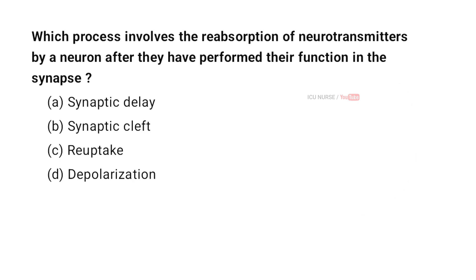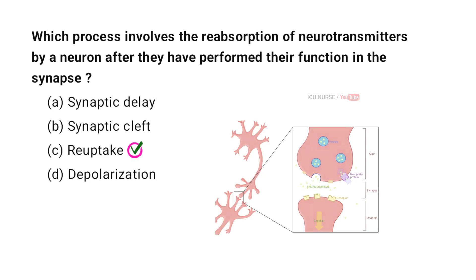Which process involves the reabsorption of neurotransmitters by a neuron after they have performed their function in the synapse? A. Synaptic delay, B. Synaptic cleft, C. Reuptake, D. Depolarization. And the correct answer is C. Reuptake. Reuptake is when a neuron takes back neurotransmitters it released. After sending a signal, the neurotransmitters return to the neuron, stopping the signal and helping control neurotransmitter levels.